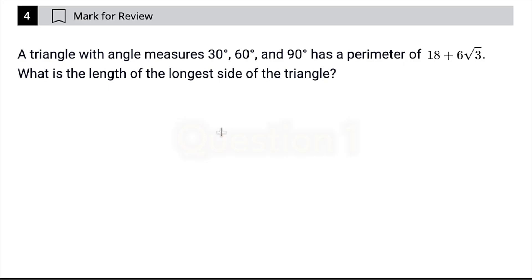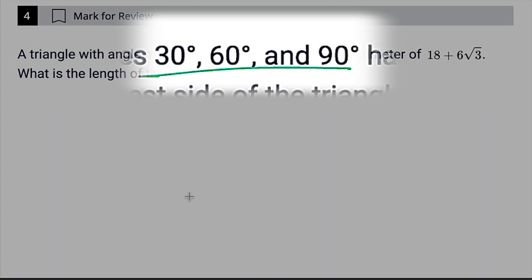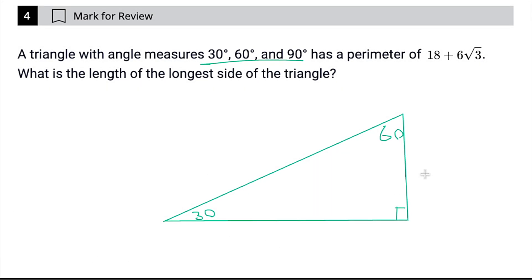If you've got your formulas memorized, you see 30, 60, 90, and you're automatically thinking about the rules. Those rules being that your short leg is going to be x, your hypotenuse is going to be 2x, and your long leg is going to be x times the square root of 3.